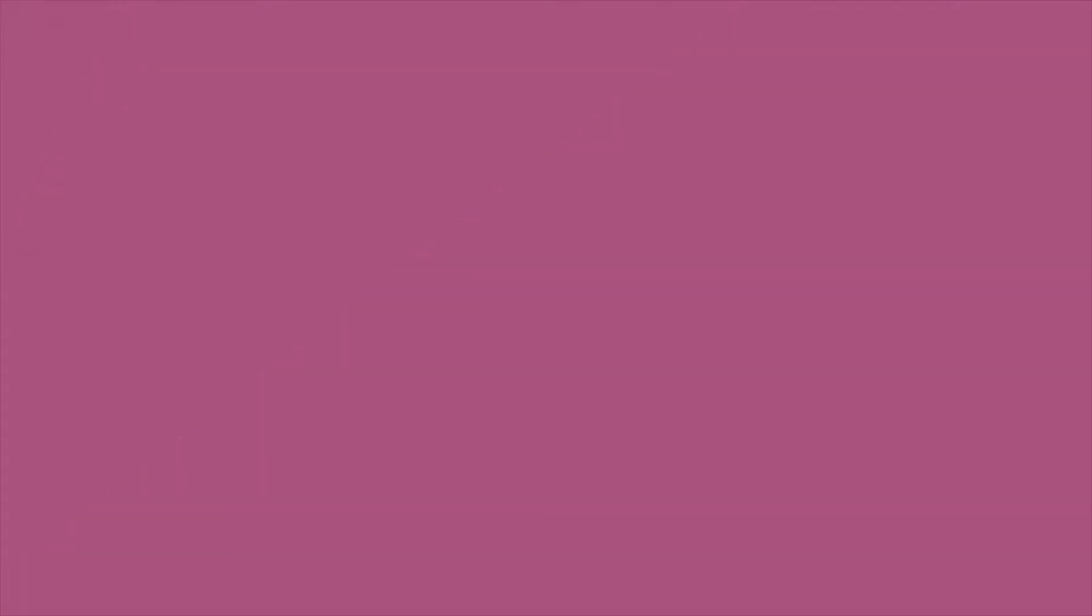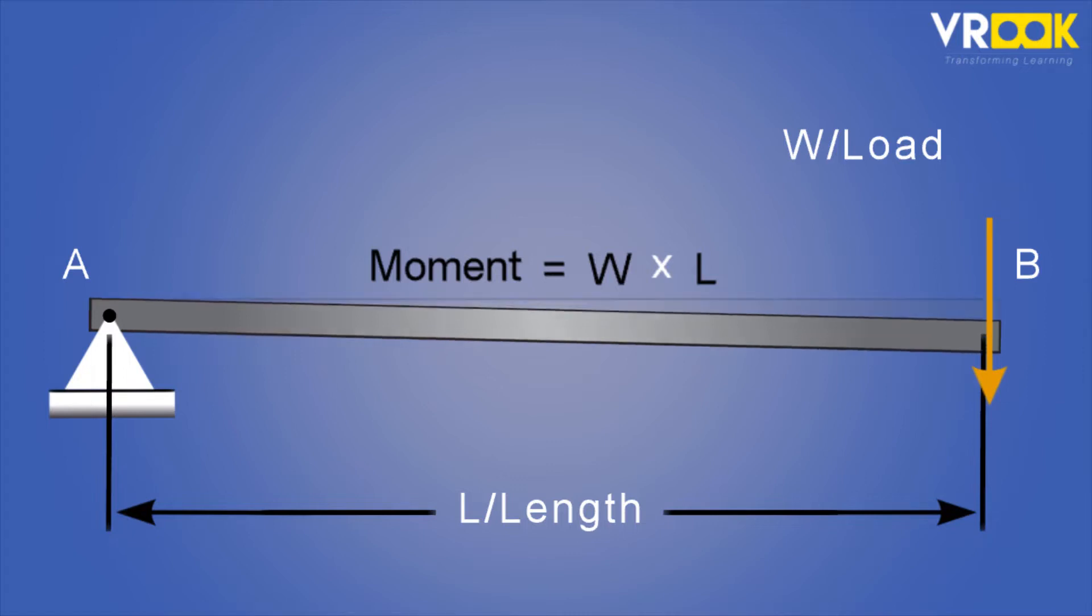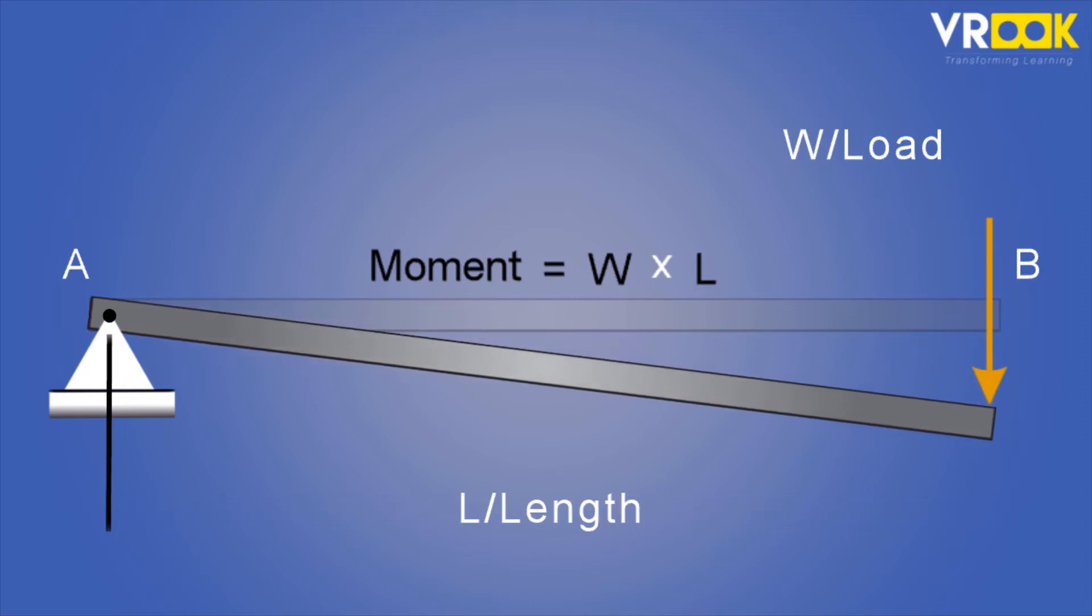The difference between force and moment is that force acts at a point on the beam horizontally or vertically, but the moment acts about a point. It will try to rotate that point clockwise or anti-clockwise.